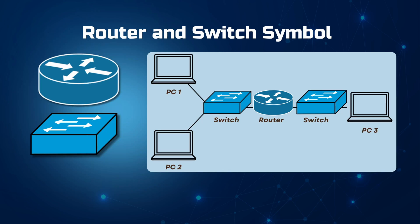In a typical network setup, switches create an internal network infrastructure allowing devices within the same network to communicate efficiently. For example, two computers connected to one switch can communicate with each other. Routers then connect those internal networks together — so for PC3 to communicate with PC1 or PC2, a router must sit between the switches, allowing the two networks to be connected.